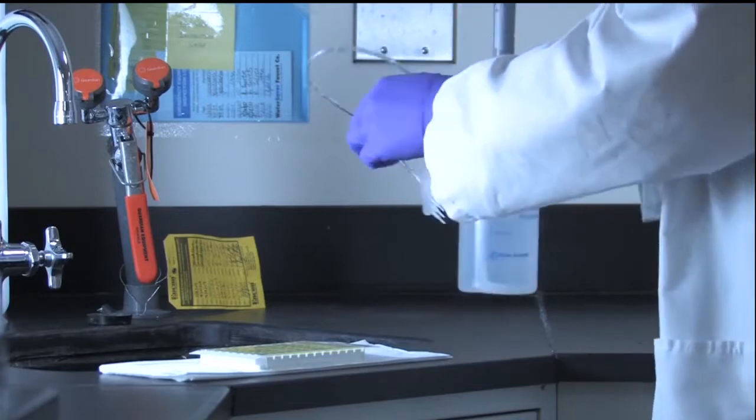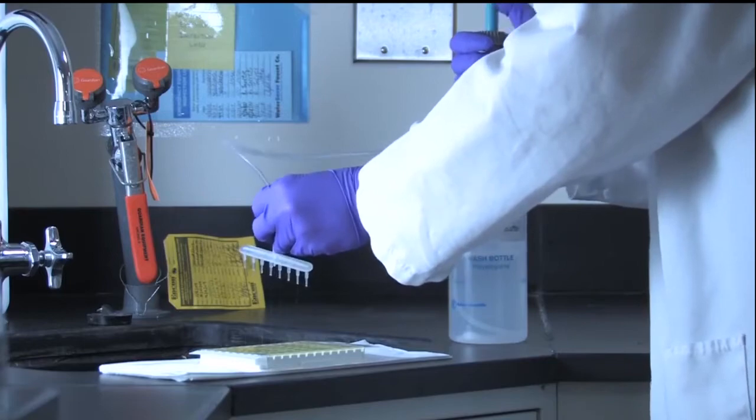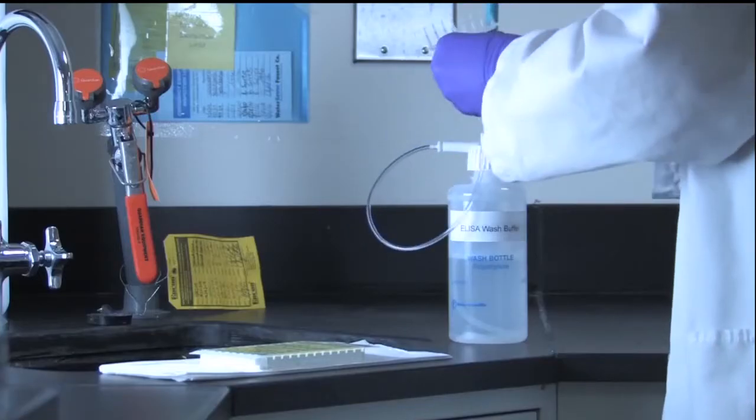For handheld plate washing, transfer the wash buffer to a clean polyurethane bottle and attach the appropriate wash dispenser. Prime the dispenser until all bubbles have been removed.